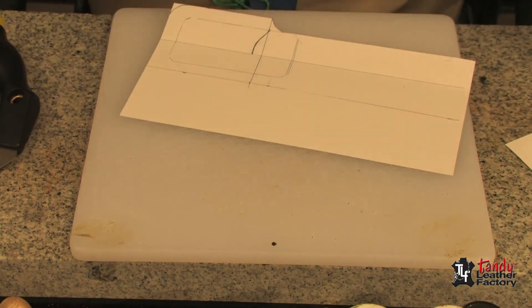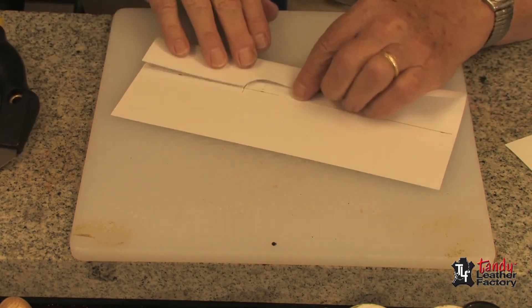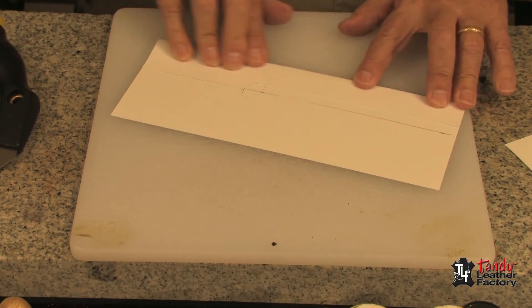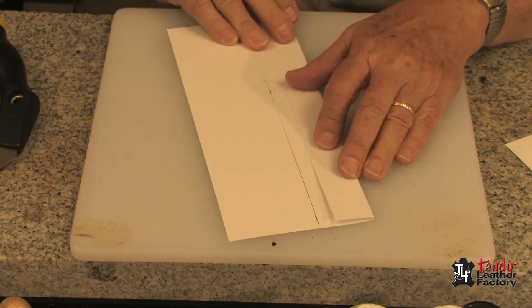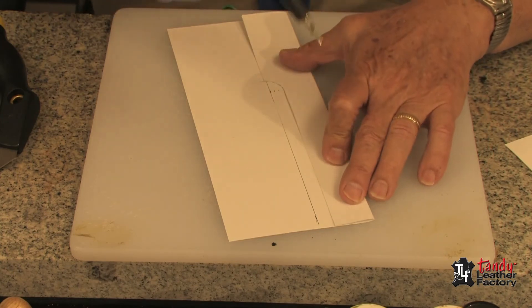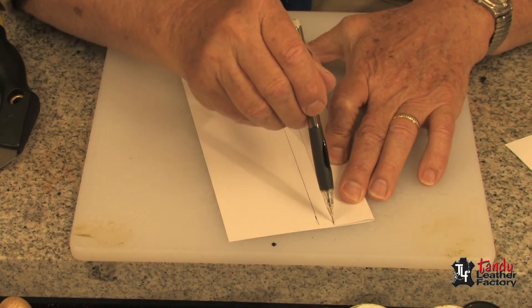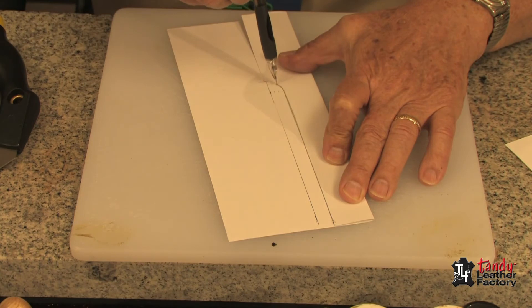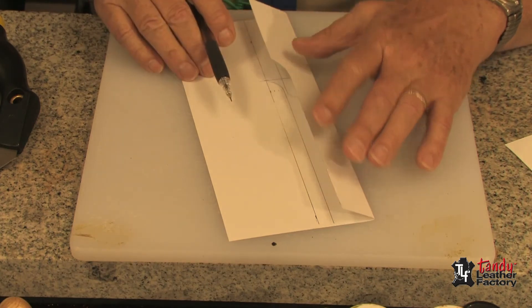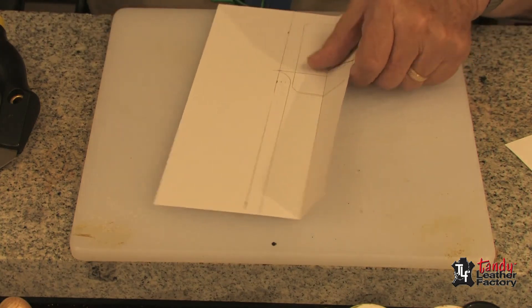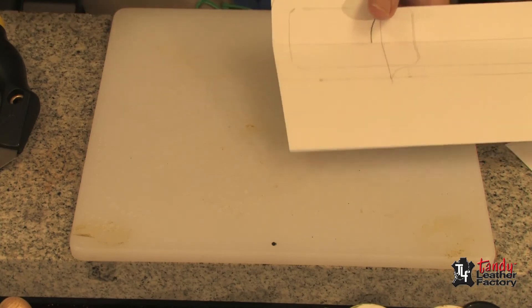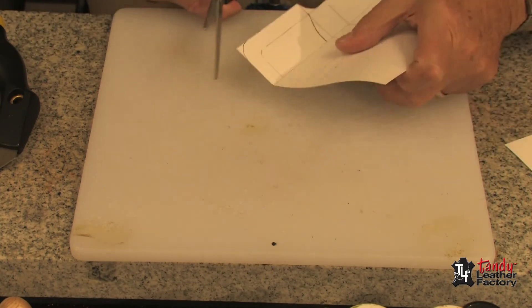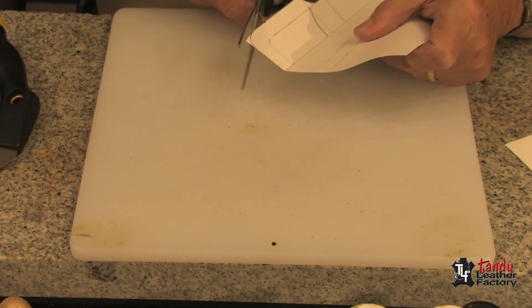Now this time we will fold our paper as you see me doing here. We'll take a pencil and we will mark as you see there. I'll also take the shears and cut the curve on the bottom.